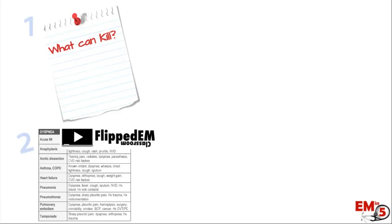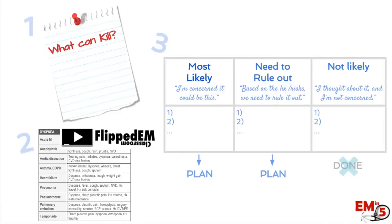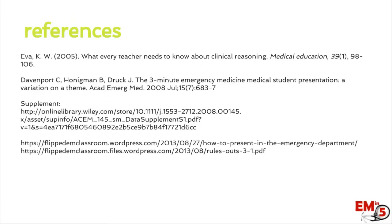Let's review. For every patient and every symptom, you need to come up with a 'what can kill' list and address each of those things on your assessment and plan. You can use resources like the Flipped Classroom or a basic emergency textbook to help. And third, organize your entire differential into three parts: most likely, need to rule out, and not as likely. Thanks for joining us this week on EMN5.